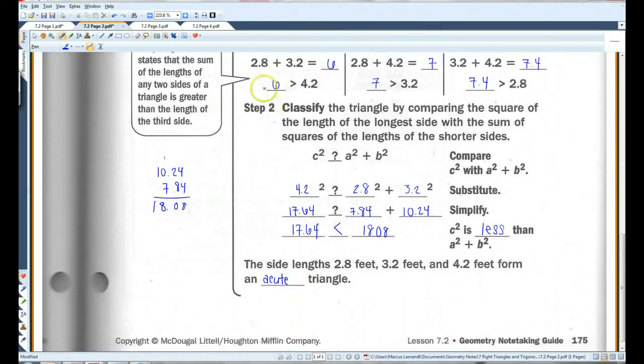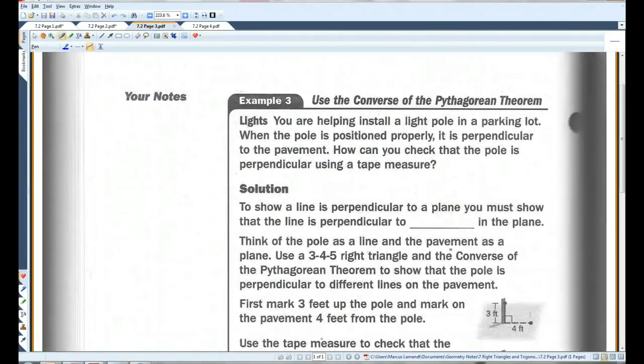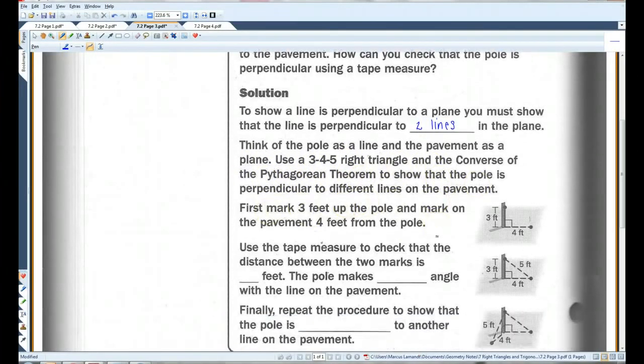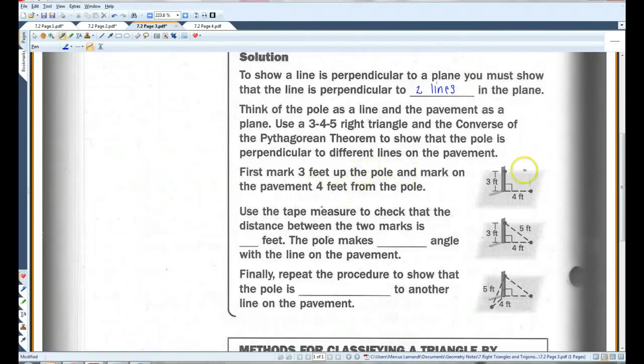Alright. You are helping install a light pole in a parking lot. When the pole is positioned properly, it is perpendicular to the pavement. How can you check that the pole is perpendicular using a tape measure? To show that a line is perpendicular to a plane, you must show that the line is perpendicular to two lines in the plane. So think of the pole as a line and the pavement as a plane. Use a 3-4-5 right triangle and the converse of the Pythagorean theorem to show that the pole is perpendicular to different lines on the pavement. First, mark three feet up the pole.